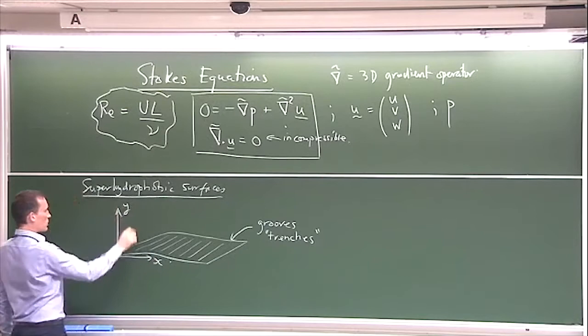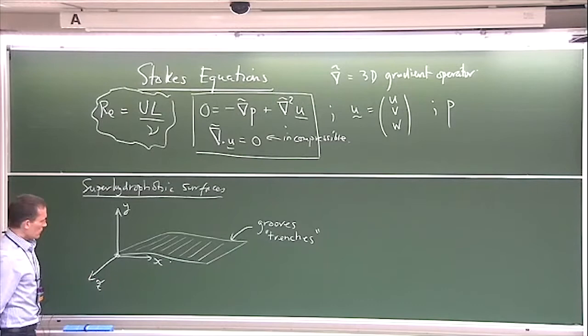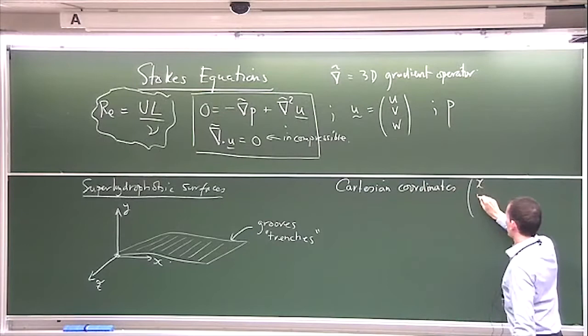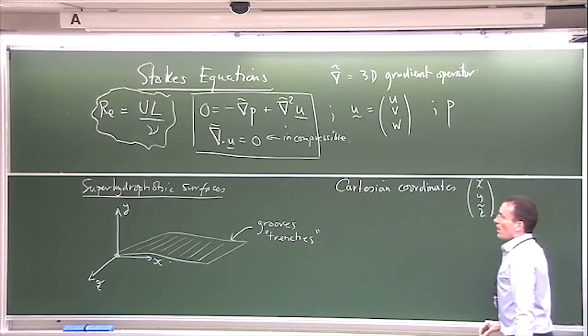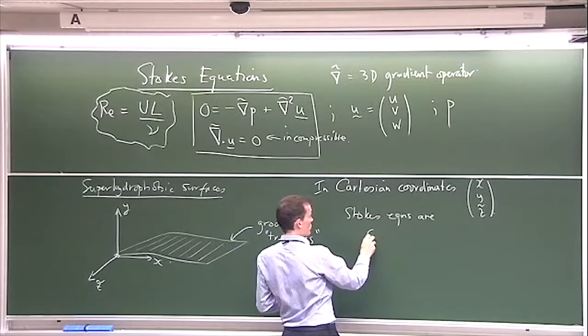Let's give ourselves a coordinate system. Call this x and y, and coming out of the board — the grooves are in the z-tilde direction. So in Cartesian coordinates x, y, z-tilde, the Stokes equations are, written out component-wise: there's u, the first component; the y-component; the z-tilde component; and then, of course, the last equation is the divergence-free condition.